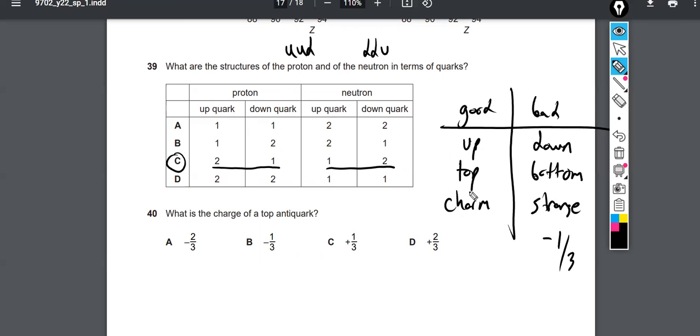They're negative and they're negative one-third. These are all good: up, top, charm. Charming, it's very good. So that's positive, and they're all positive two-thirds. So that's maybe a way to remember which quarks are positive two-thirds and which quarks are negative one-third.